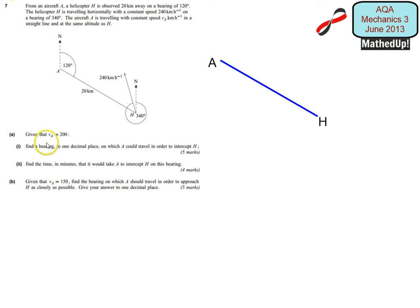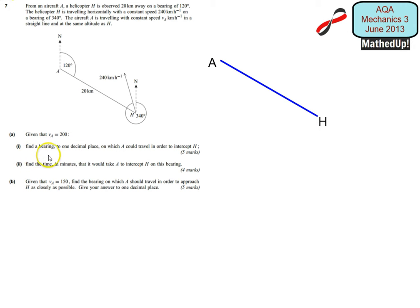For part A, we are being told that the velocity of the aircraft VA is equal to 200 kilometres per hour. For the first part, we need to find a bearing to one decimal place on which A could travel in order to intercept H.